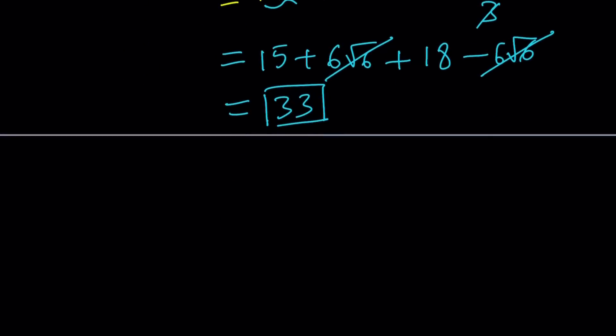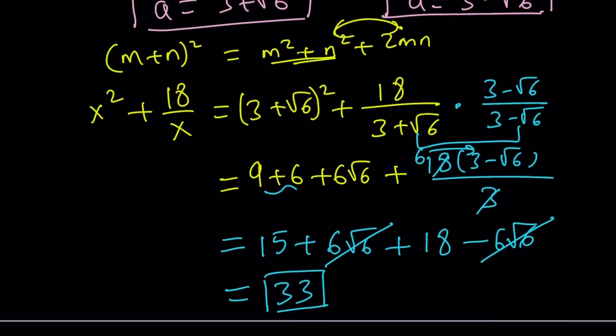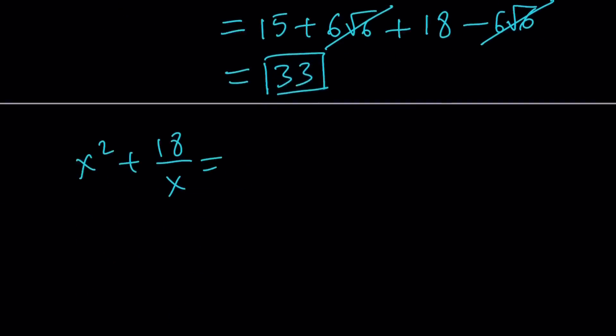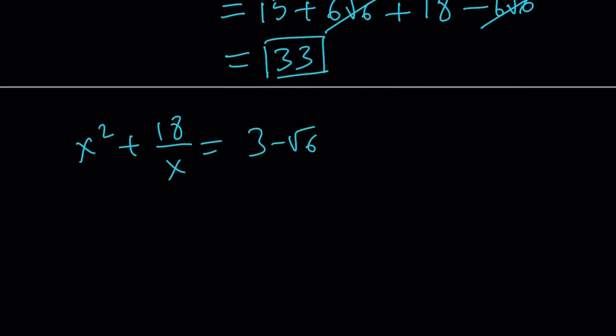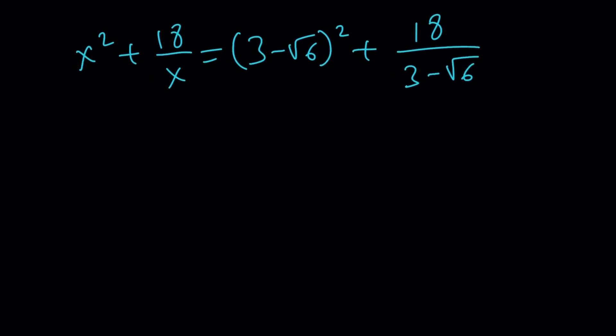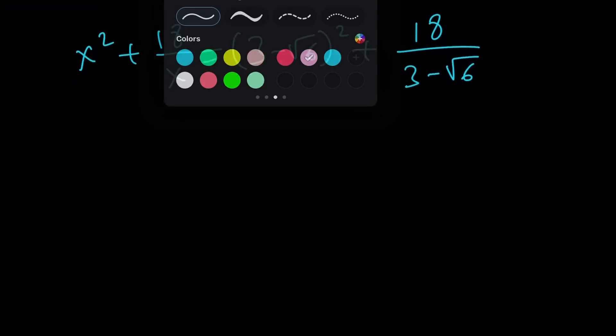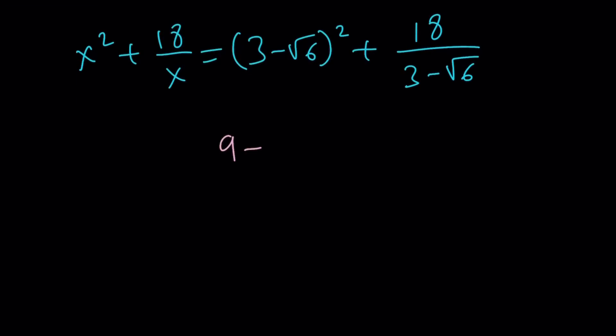Now, you might be wondering, what would happen if you used the different value of x, like the conjugate, the 3 minus root 6? Let's give it a try. So if you replace x with 3 minus root 6, you're going to go through pretty much the same steps. So you're going to square this, 9 plus 6. You know the drill. Minus 6 root 6.